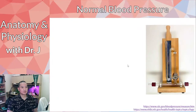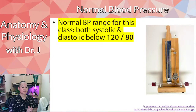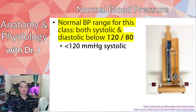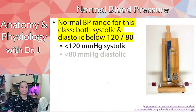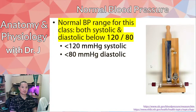Let's establish our reference value for blood pressure in this class. Normal blood pressure is below 120 over 80 — meaning less than 120 mmHg systolic and less than 80 mmHg diastolic. Millimeters of mercury is a unit of pressure from how it used to be measured historically, but you don't need to know how it was derived. Diastolic is when the heart is relaxed, below 80.